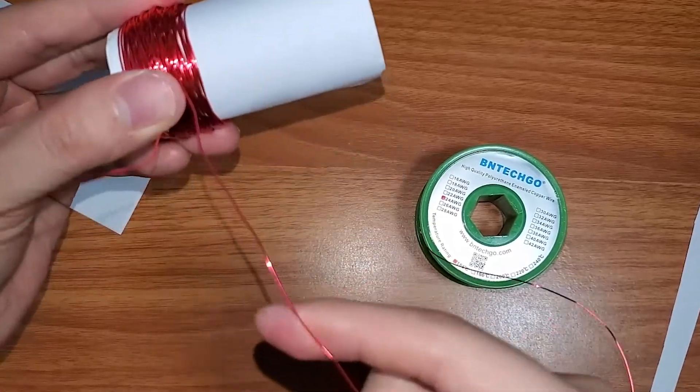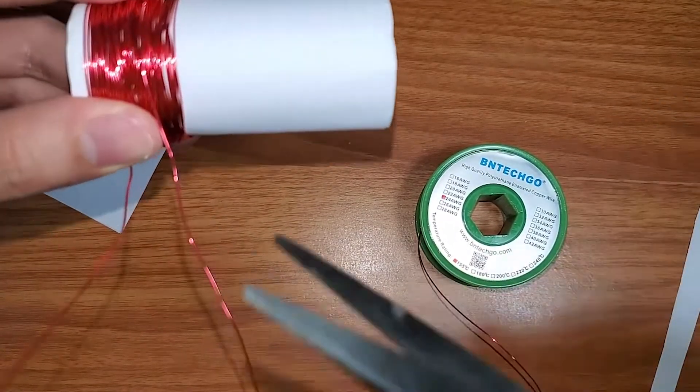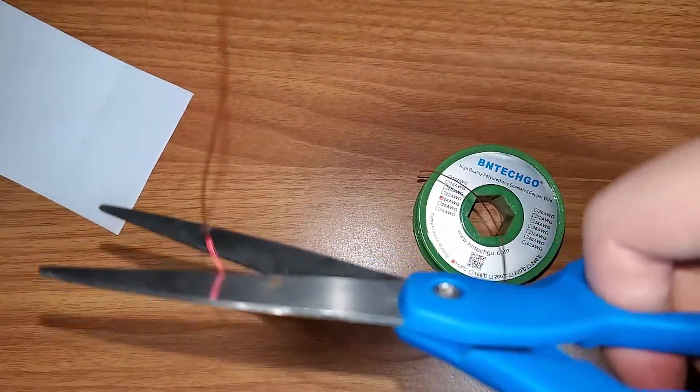Now that we have our coil all wrapped up, we're going to go ahead and trim it off. So again, think about the couple inches that we want to have and I'm going to snip it here.